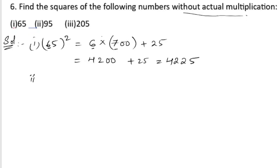Now let us take the second one: 95 whole square. So 9 into, we need to multiply this with 10 hundreds, that is 1000, plus 25. So 9 into 1000 is 9000 plus 25, which gives us 9025.